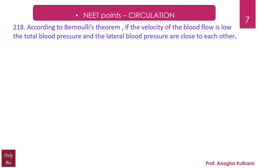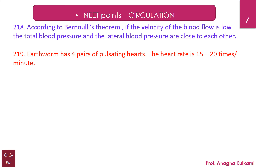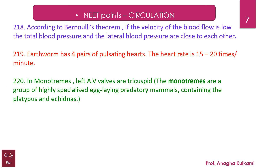Point number 218: According to Bernoulli's theorem, if the velocity of blood flow is low, the total blood pressure and the lateral blood pressure are close to each other. Earthworm has four pairs of pulsating hearts; the heart rate is 15 to 20 times per minute. Point 220: In monotremes, the left atrioventricular valve is tricuspid. For your information, monotremes are a group of highly specialized egg-laying predatory mammals containing platypus and echidnas.